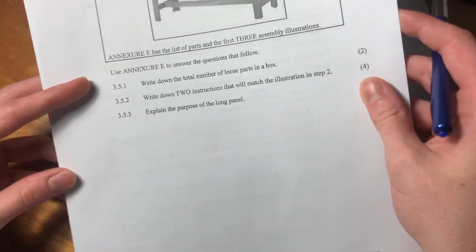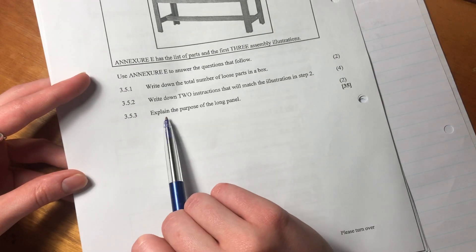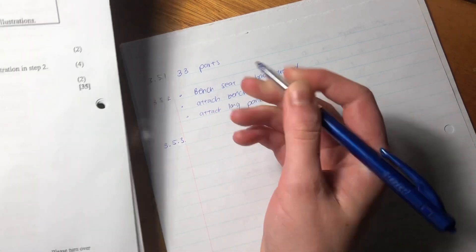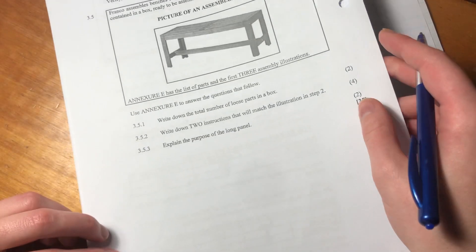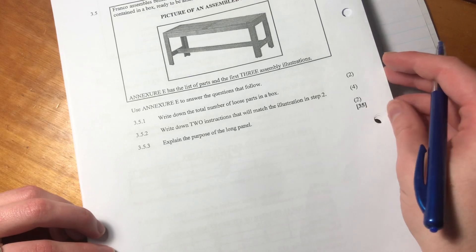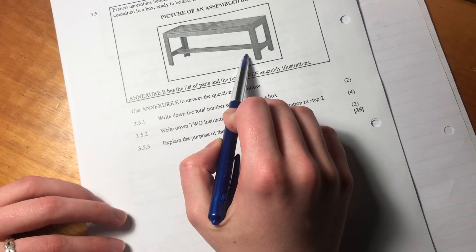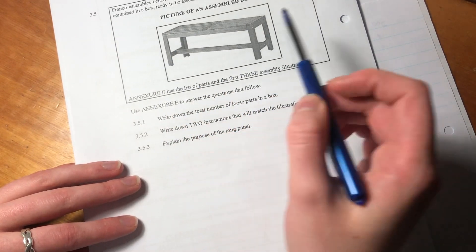I've got so many papers here. 3.5.3 says explain the purpose of the long panel. So I'm not an engineer, so I cannot be completely sure. But according to the memo, and I asked my brother who actually is an engineer, this panel is for stabilization purposes, right? So it stabilizes the legs.